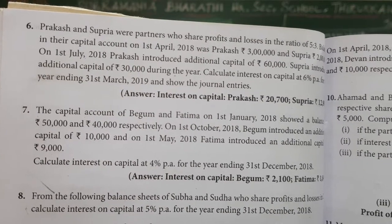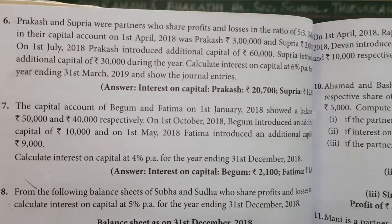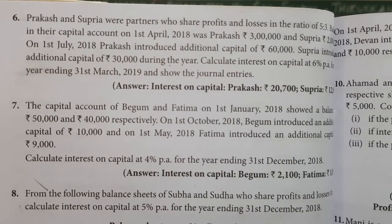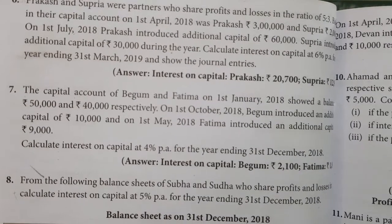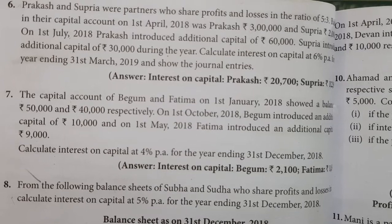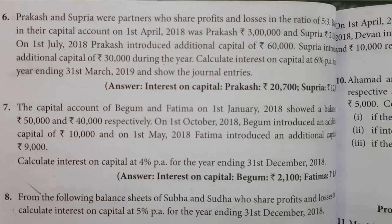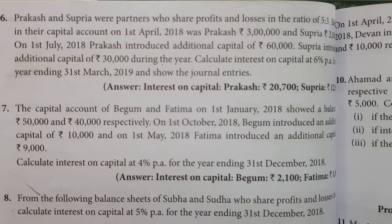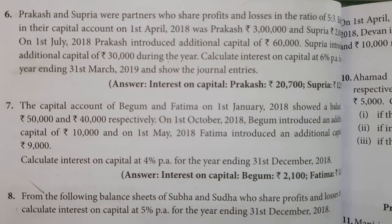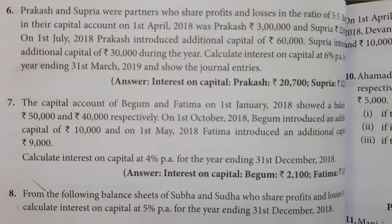For 12th A3 students in accountancy, we are seeing Unit 3. In this video we are going to see the sixth sum. Prakash and Supriya were partners who share profit and loss in the ratio of 5:3. The balance in their capital accounts on 1st April 2018 was Prakash 3 lakh and Supriya 2 lakh. On 1st July 2018, Prakash introduced additional capital of 60,000 and Supriya introduced additional capital of 30,000. Calculate interest on capital at 6% per annum for the year ending 31st March 2019 and show the journal entries.